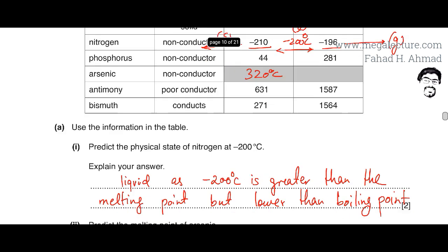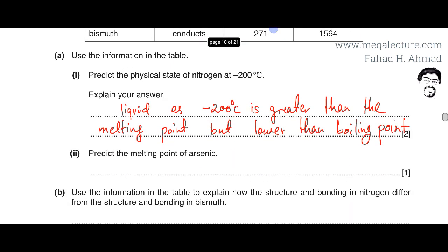We can take an estimate — something in between would be around 320°C. So, predicting according to the trend, the melting point of arsenic is approximately 320 degrees centigrade.